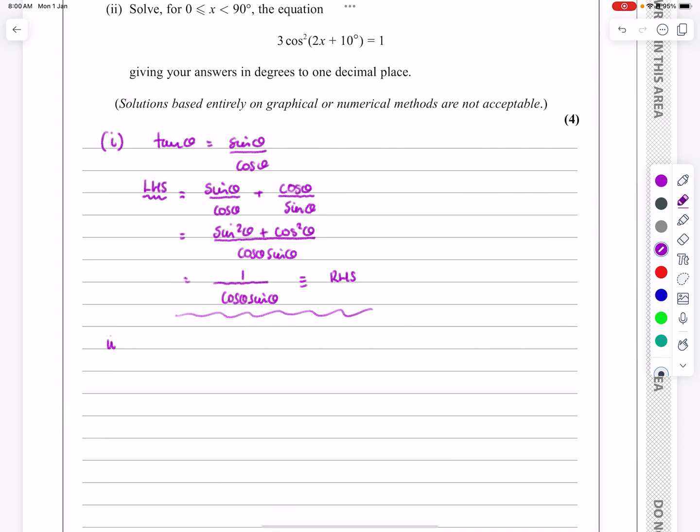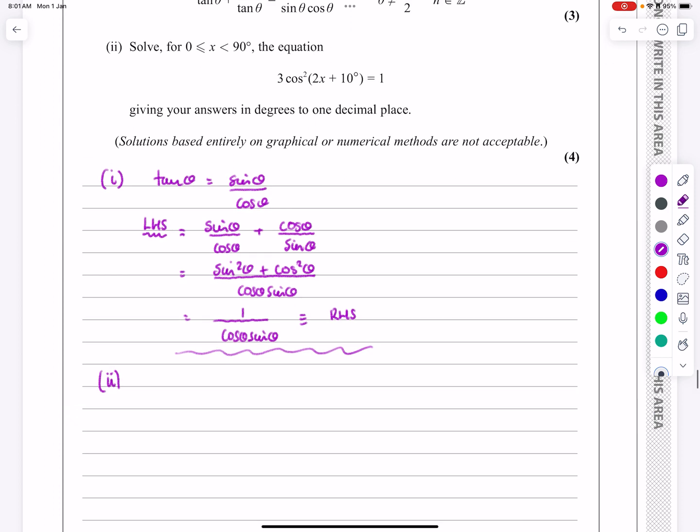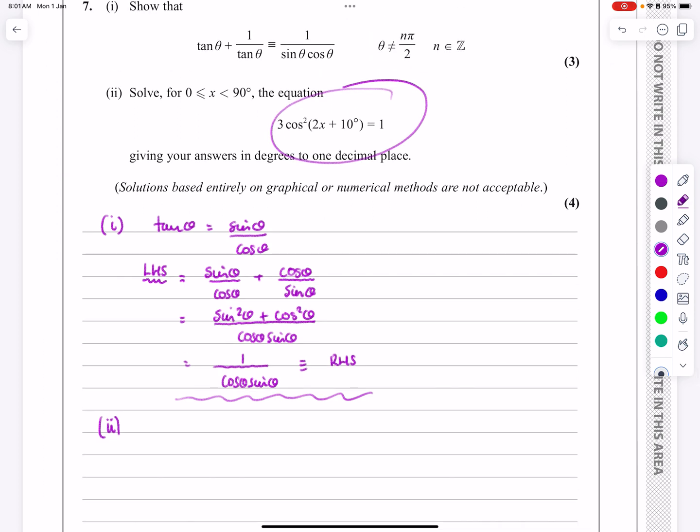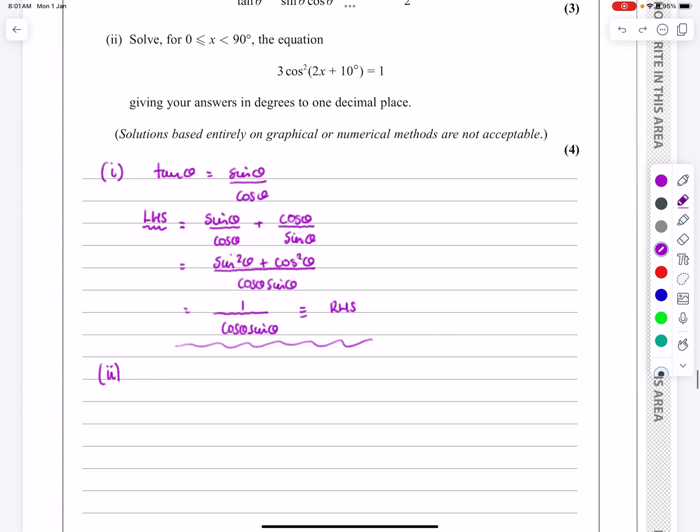Part 2 then, we have the trig equation, and the trig equation says 3 cos squared 2x plus 10 is equal to 1. What I do need to do is to focus on the fact that if that's 2x plus 10, I'm going to need to change the set of values that my answer is going to be working out between. So I do that first of all.